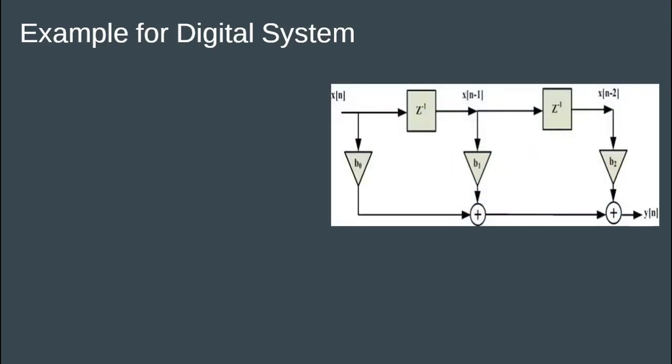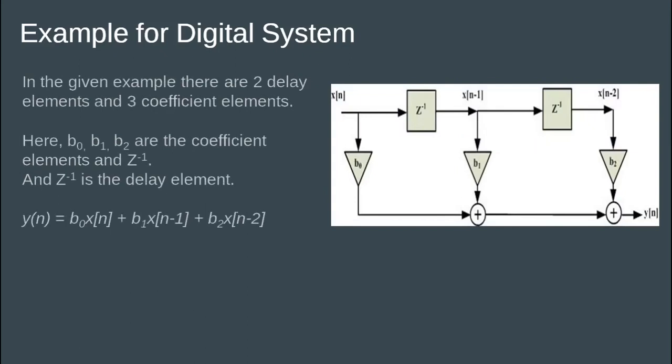The given figure shows an example of a digital system. In the given example, there are two delay elements and three coefficient elements. The coefficient elements are b0, b1, and b2, and wherever z-inverse appears, it is the delay element. So the output of the digital system, y(n), can be given as b0·x(n) + b1·x(n-1) + b2·x(n-2). x(n) is passed through z^(-1), which is a delay element, to give output x(n-1).